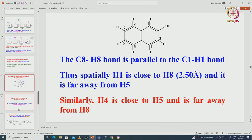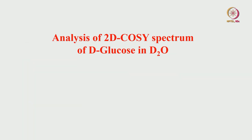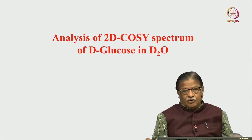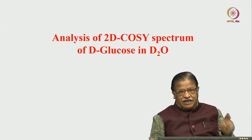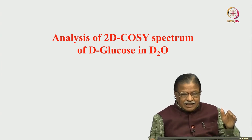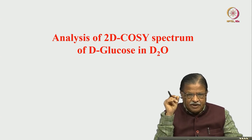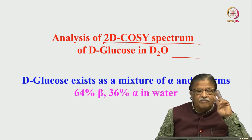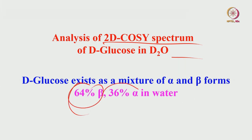In the meantime, we will go to the 2D COSY spectrum of D-glucose. Glucose exists in two forms: conventional glucose has alpha and beta forms — 64 percent beta and 36 percent alpha. That is the mixture it exists in in two forms. Before going to the analysis of the spectrum, you should know the coupling constants.